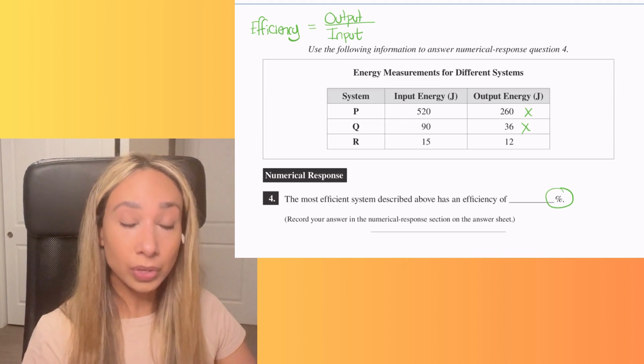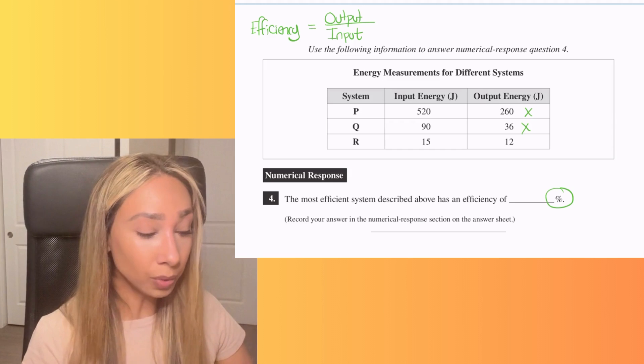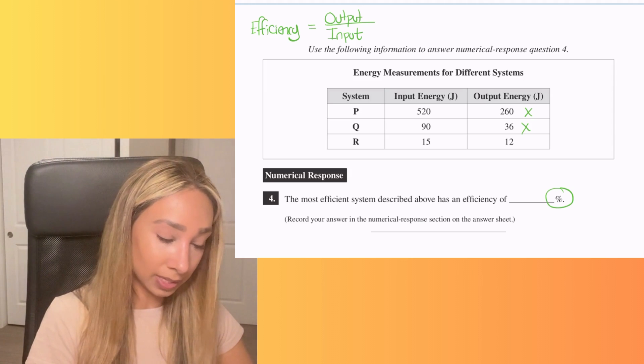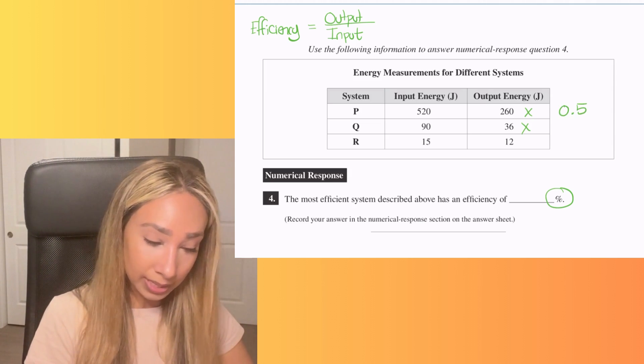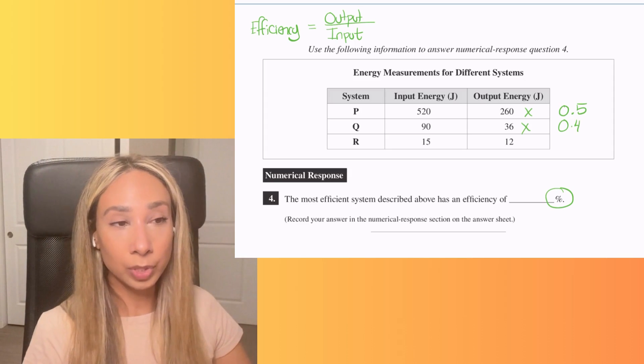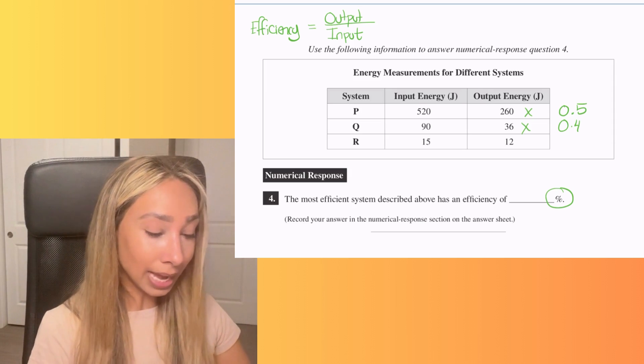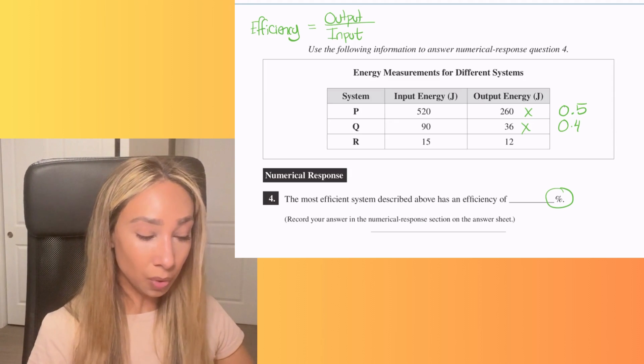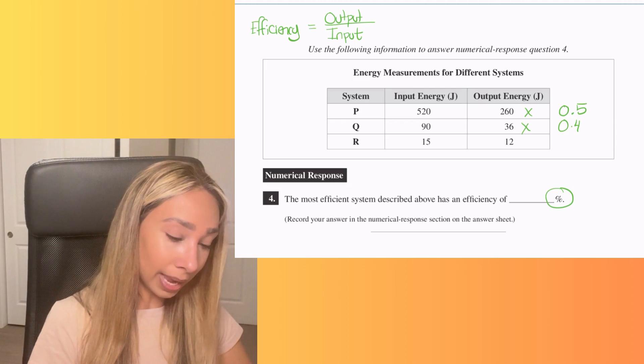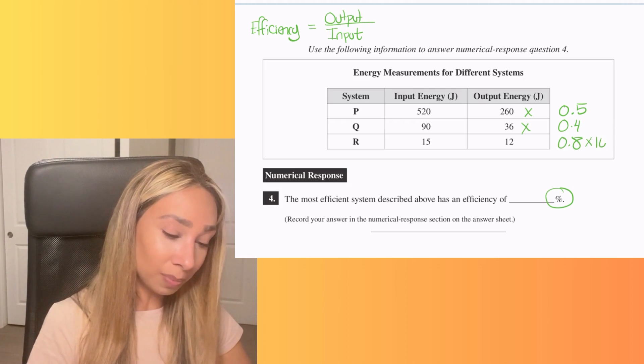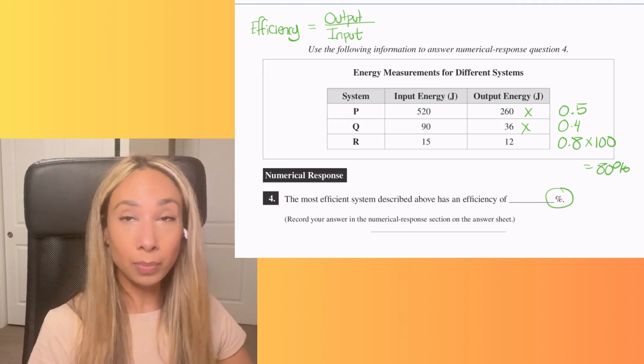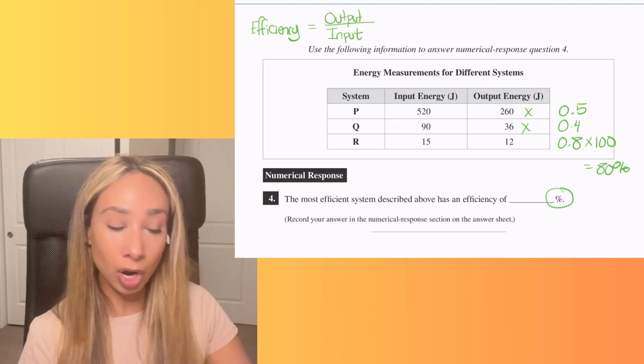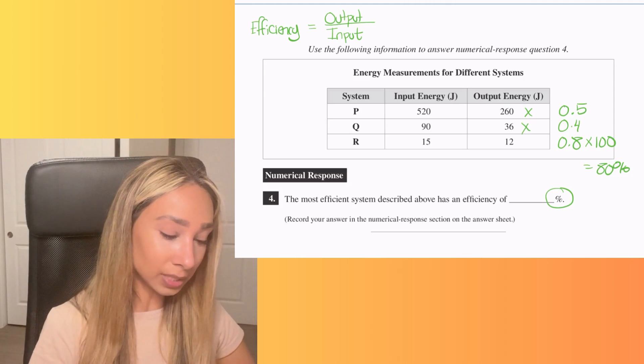Now, if you need to, you can also calculate it by going output over input. When you calculate it, the efficiency for P is 0.5 and the efficiency for Q is 0.4. And just remember to multiply those numbers by a hundred to get the percentage. Now our last one, the difference between the input and the output is quite small. So 15 over 12, I'm going to get 0.8. When I multiply that by a hundred, that will give me 80%, meaning that system R is very efficient. 80% of the energy it uses, it's converting that into doing its job, whatever that job is. So the answer for number four is going to be 80.